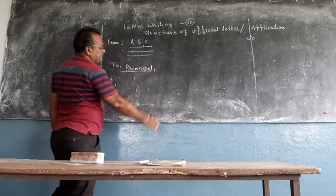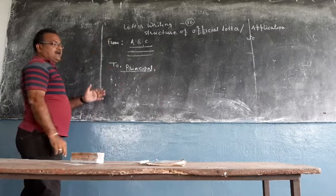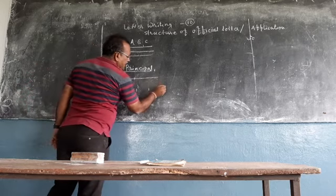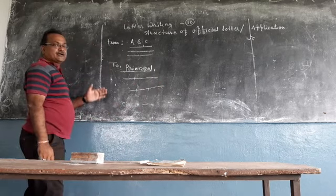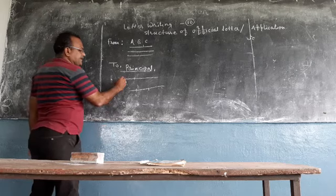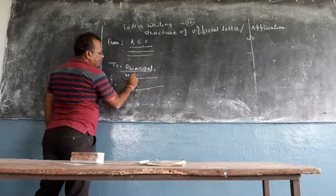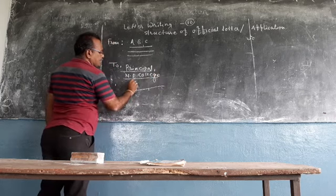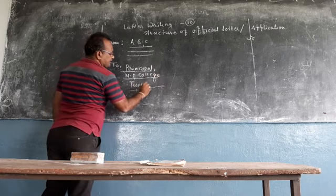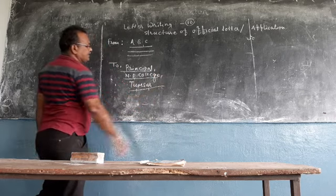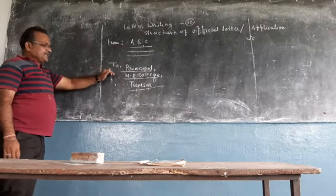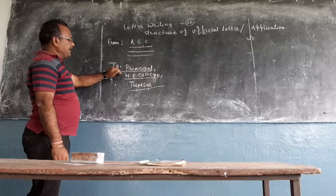Like, here you can write principal in the first line. Then you can comma again. Principal of which office, name of college, and address of that college, you have to write in the two or three lines. Like, NT College. Then you write Tumser.